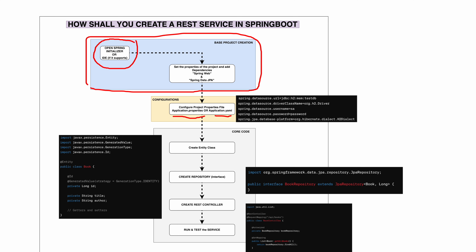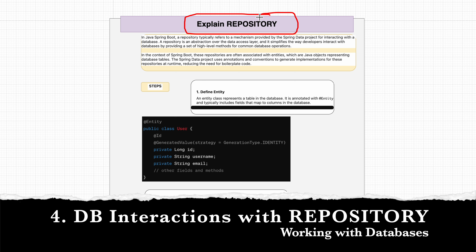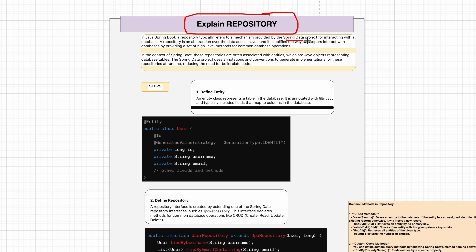What is a repository in Spring Boot? In Java Spring Boot, a repository refers to a mechanism provided by Spring Data for interacting with the database. It is an abstraction over the data access layer that simplifies how developers interact with the database by providing high-level methods for common database operations. The first step is to define an entity, using the @Entity annotation, which represents a table in the database.